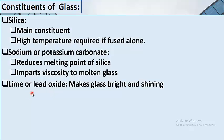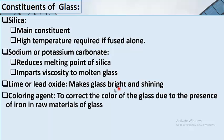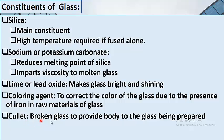The third constituent is lime or lead oxide. The purpose of lime or lead oxide is to make glass bright and shining. A coloring agent is added to correct the color of glass due to the presence of iron in the raw materials. Colored broken glass provides body to the glass being prepared. The main constituents are silica, sodium or potassium carbonate, lime or lead oxide, and various coloring agents.